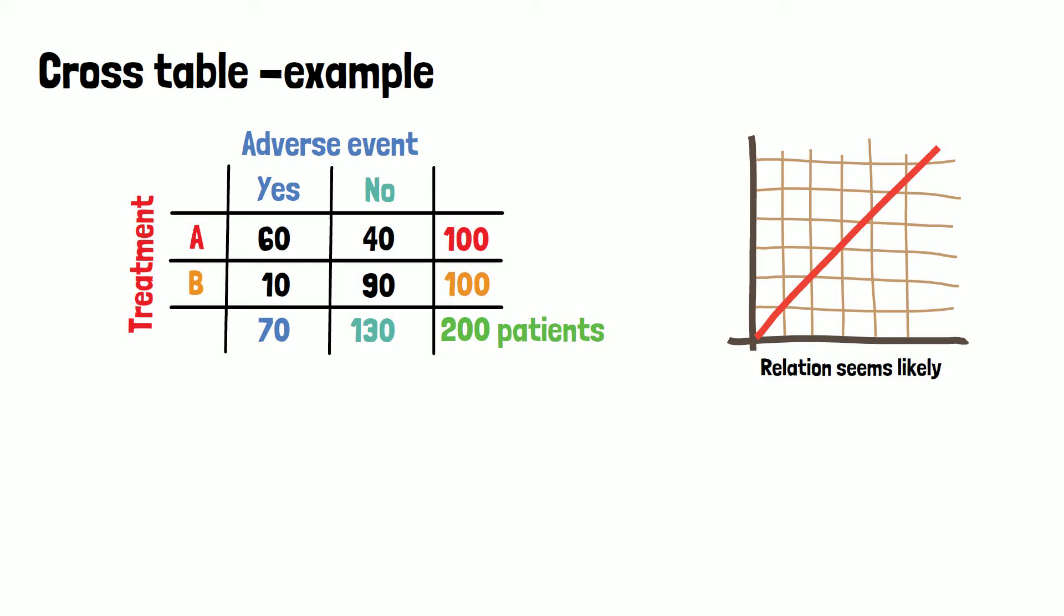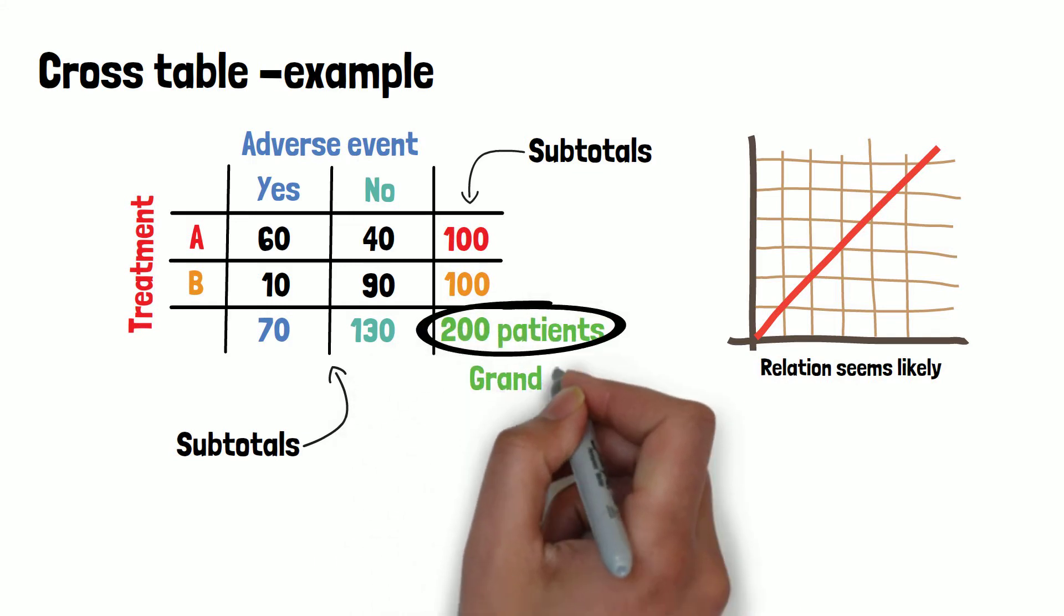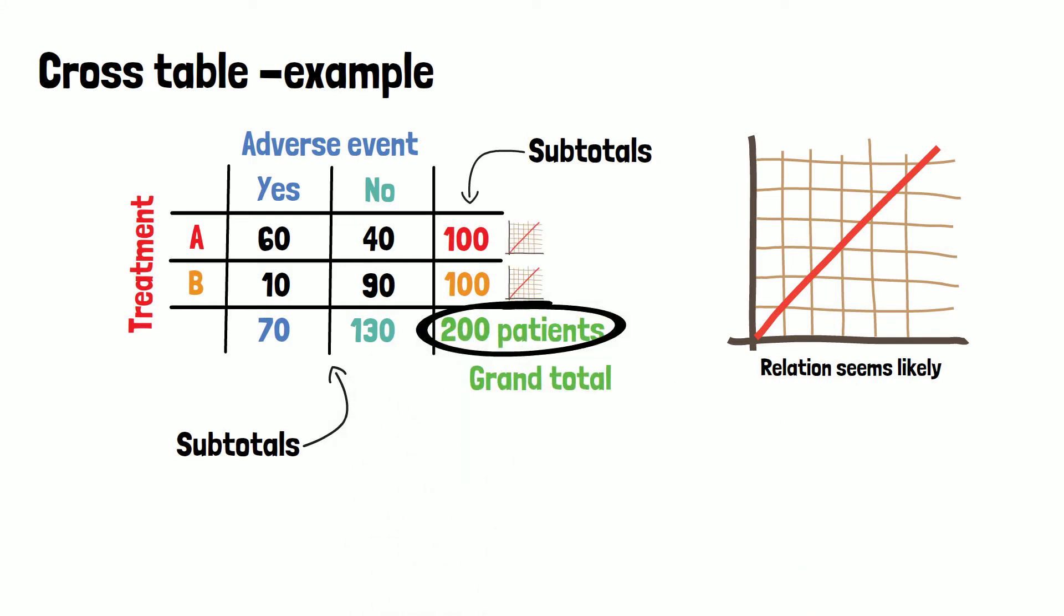Additionally, cross tables can provide subtotals for columns or rows, as well as the grand total. For illustrative purposes, sometimes also images or plots can be found on the horizontal or vertical axis.